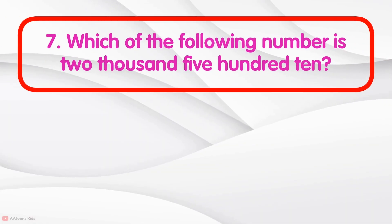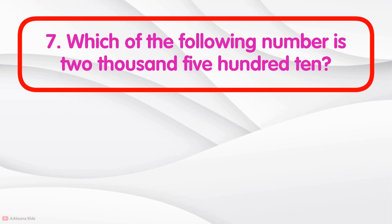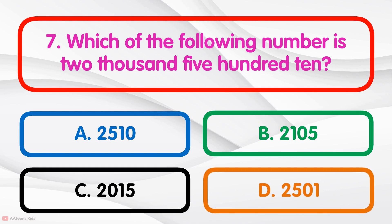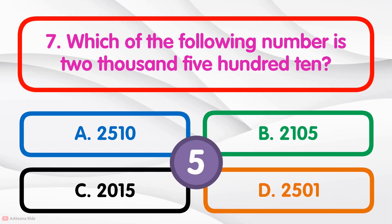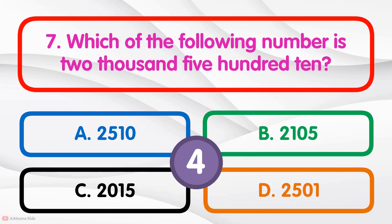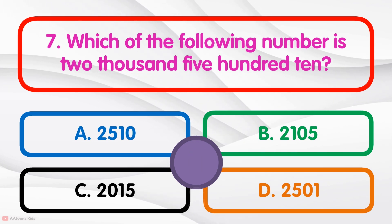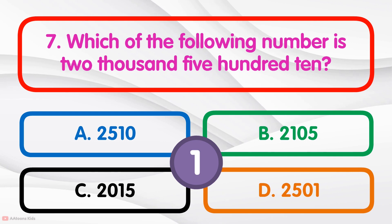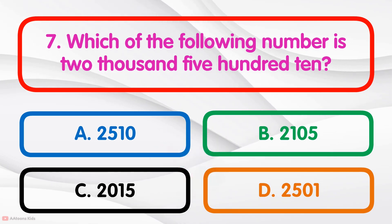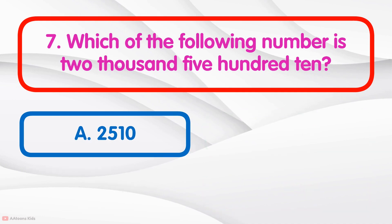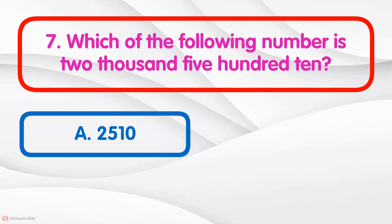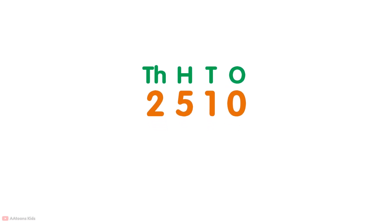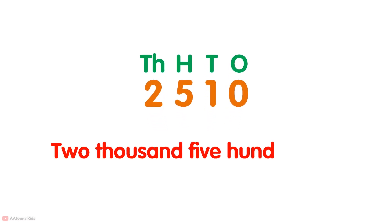Which of the following number is two thousand five hundred and ten? Option A is two thousand five hundred and ten. Two thousand five hundred and ten.